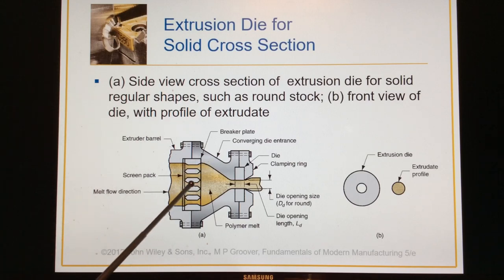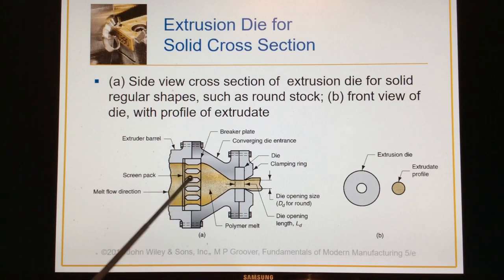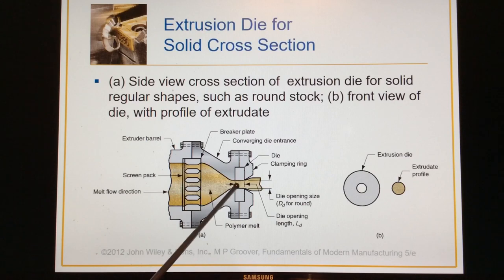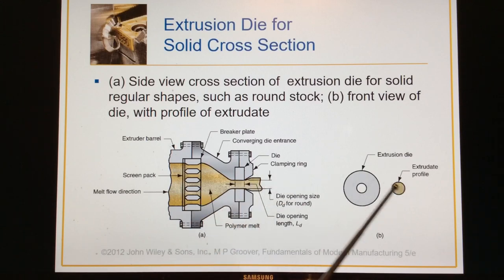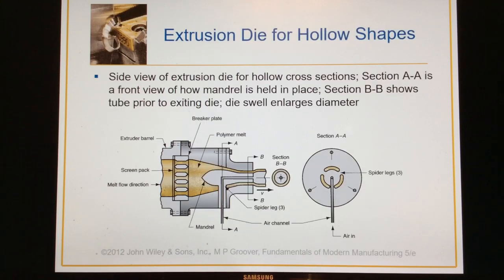Here's a close-up of what the end of the extruder looks like — this is what they call a screen pack, which puts the flow into a more laminar state as it gets ready to go through the orifice and out the die opening. Whatever the die opening shape is, you get that extrudate profile — similar to metal extrusion. And here's one for hollow profiles.